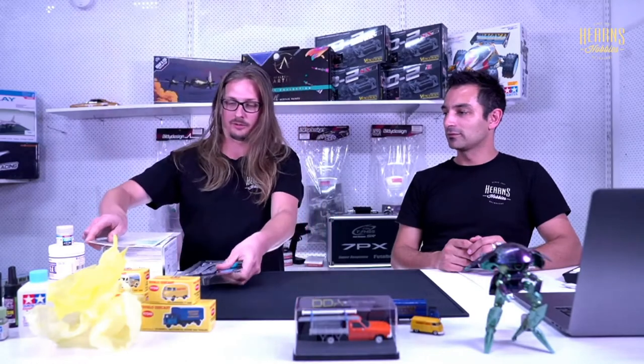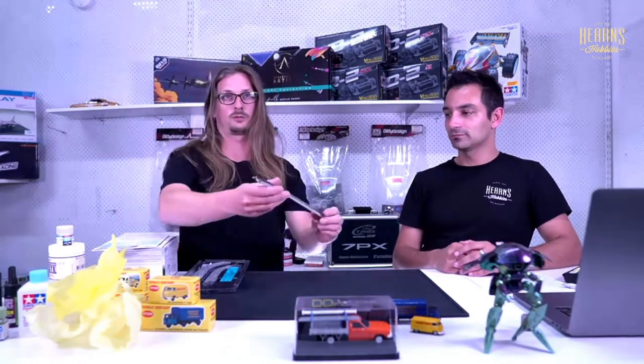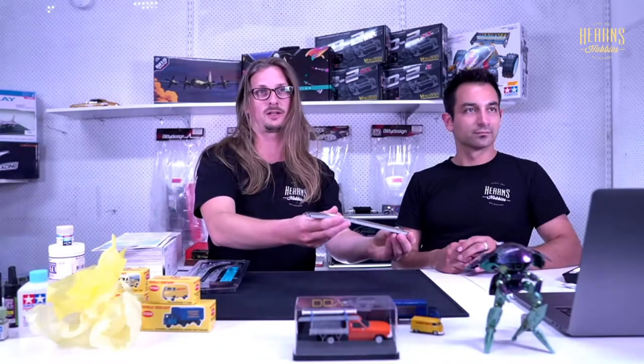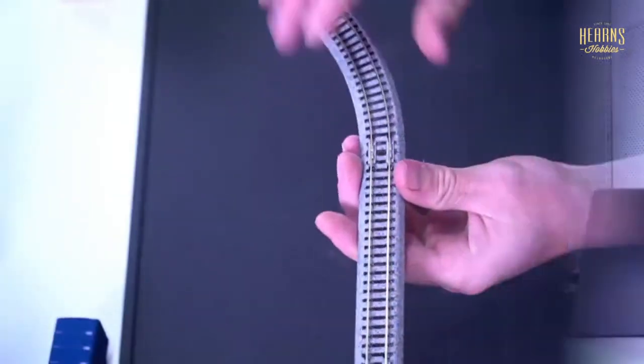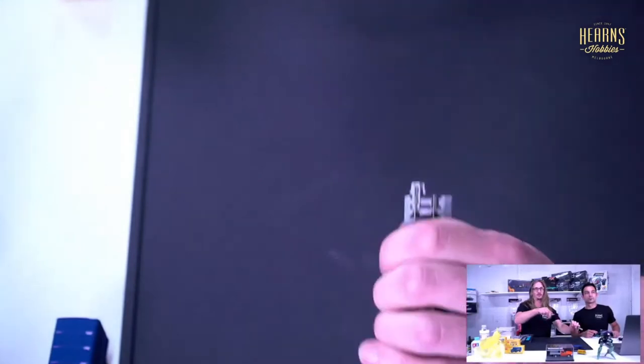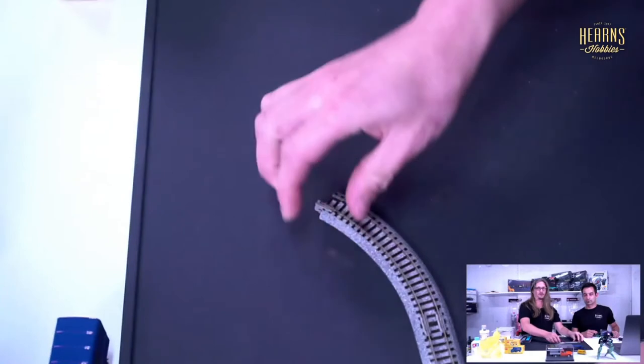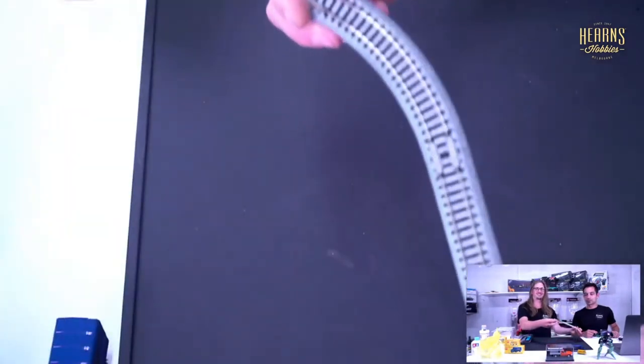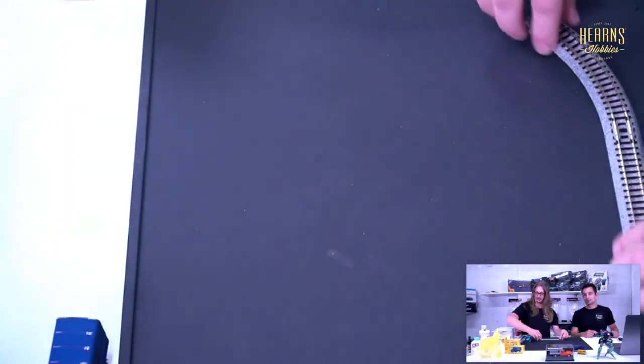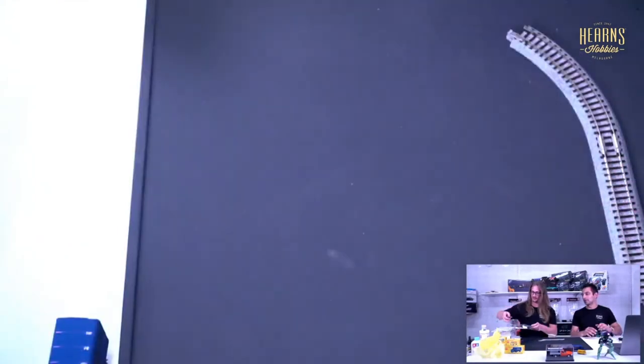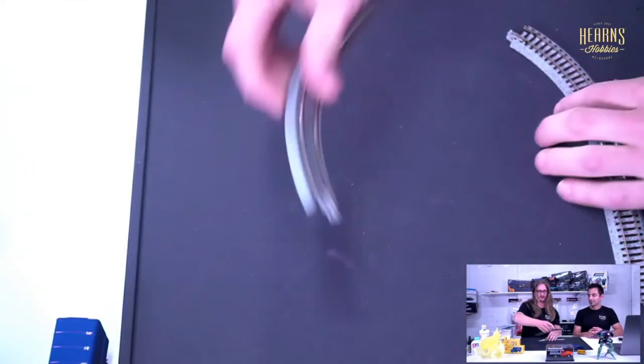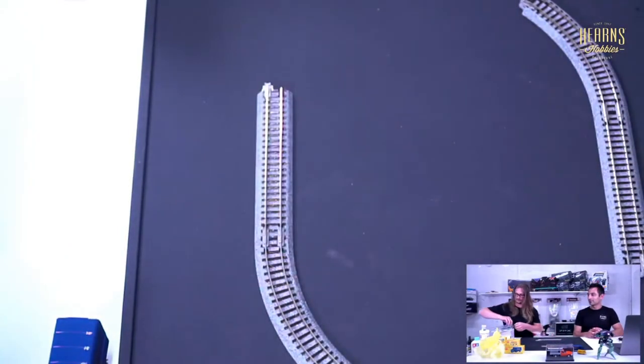So I love Kato Unitrack because it goes together very easily. The road bed is attached to the track. And then the road bed snaps apart and goes back together very easily. Just like that. Very satisfying. It's very realistic. So let's build this layout. We'll build it very quickly because it doesn't take much time at all to do this.